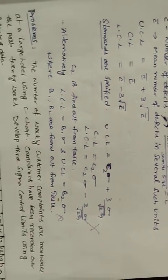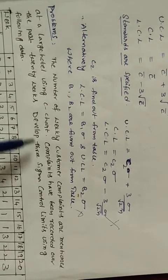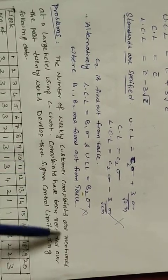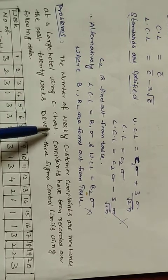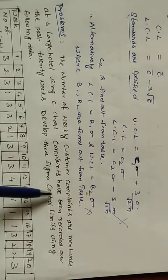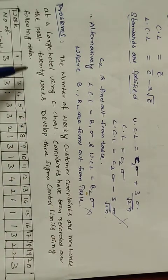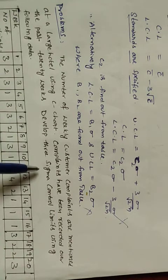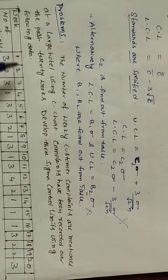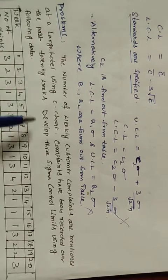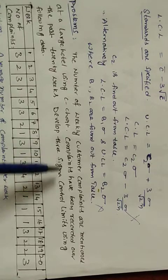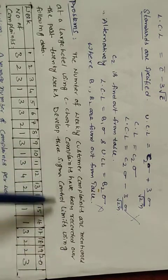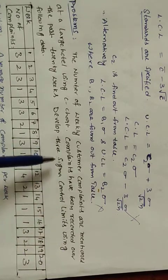C chart problem: The number of weekly customer complaints are monitored using a C chart. Complaints have been recorded over the past 20 weeks. Develop 3-sigma control limits using the following data.